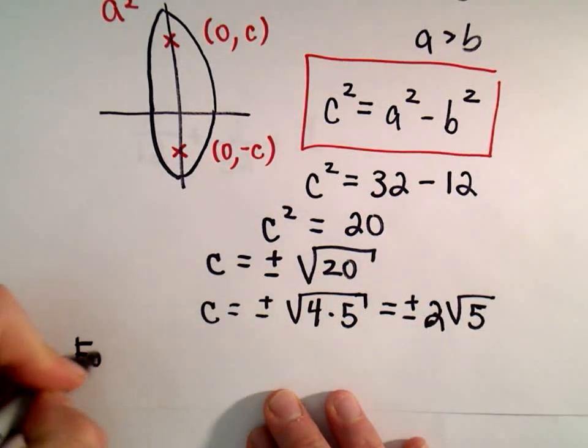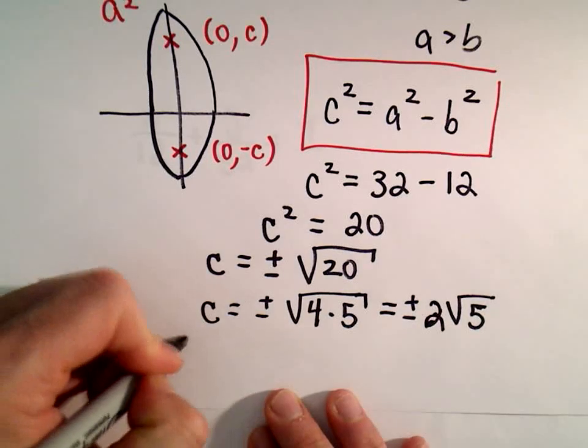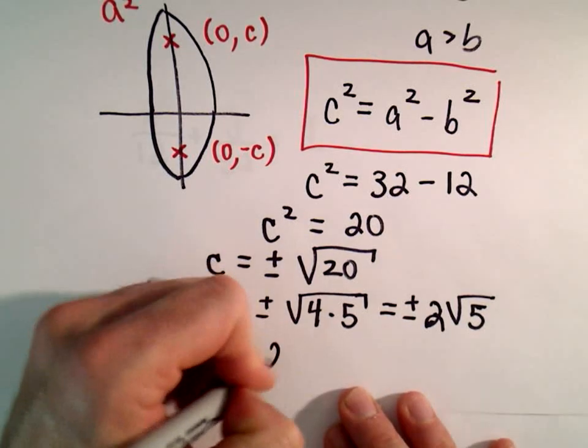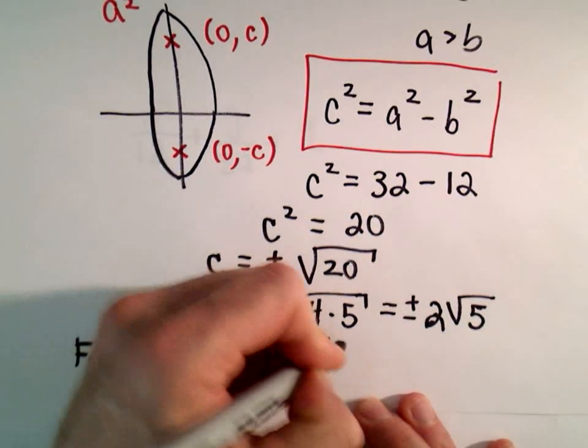That tells me that the foci are going to be located at (0, ±2√5).